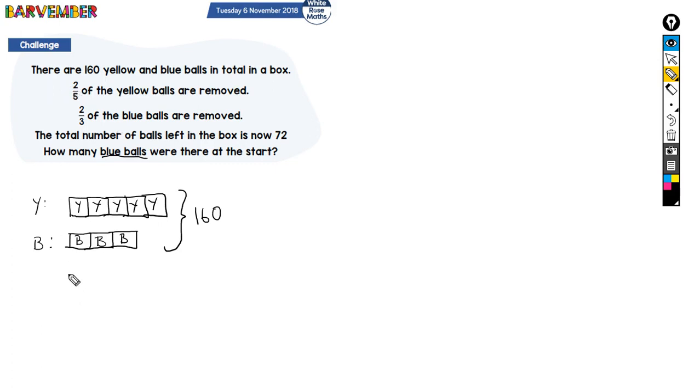I could choose to draw that again like this, so I'm going to have three fifths left—one, two, three of these yellows—and I'm going to have one blue left. So this is before, after, and that's 72.